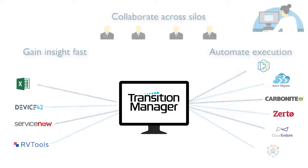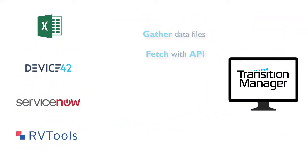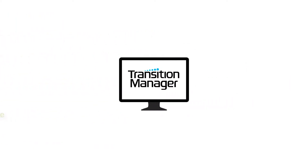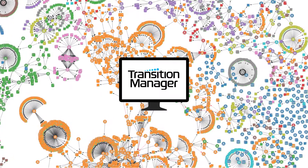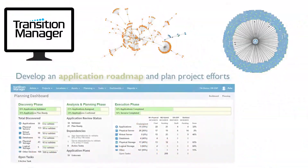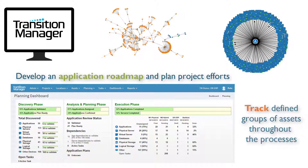Here's how it works. Transition Manager integrates with your existing tools to uncover and aggregate the data within your organization. With a complete picture of not only your applications and workloads, but their relationships, locations, owners, and dependencies, your team can quickly decide how, where, and when to move.